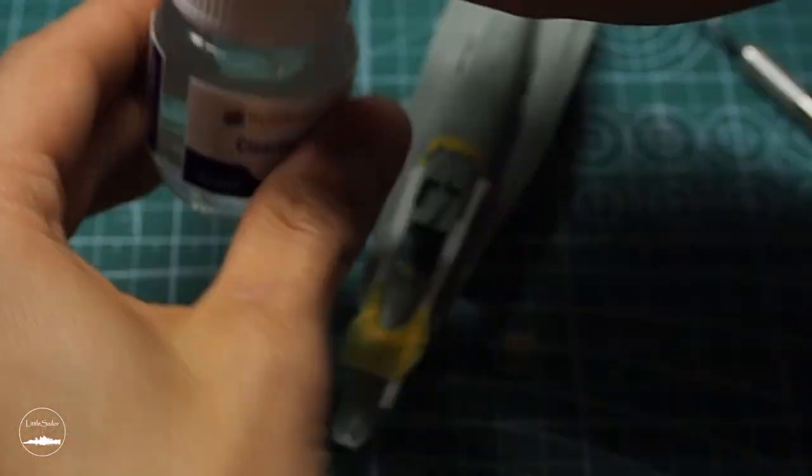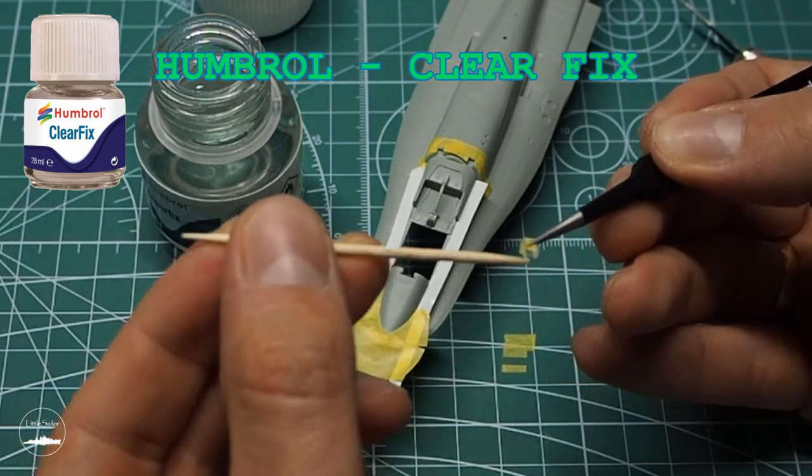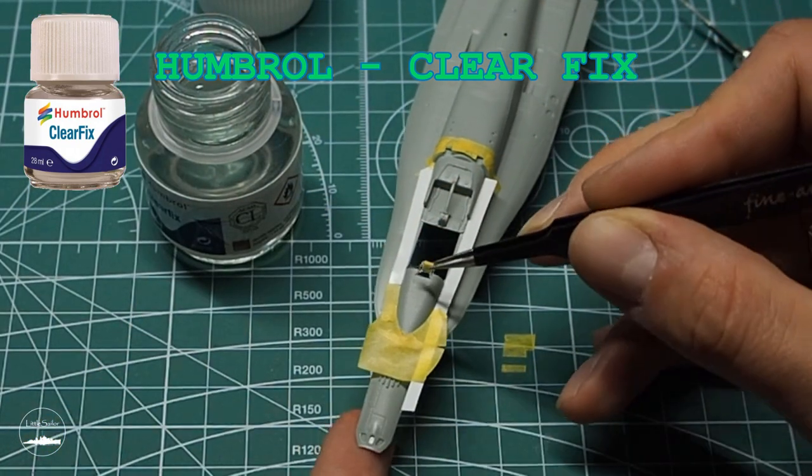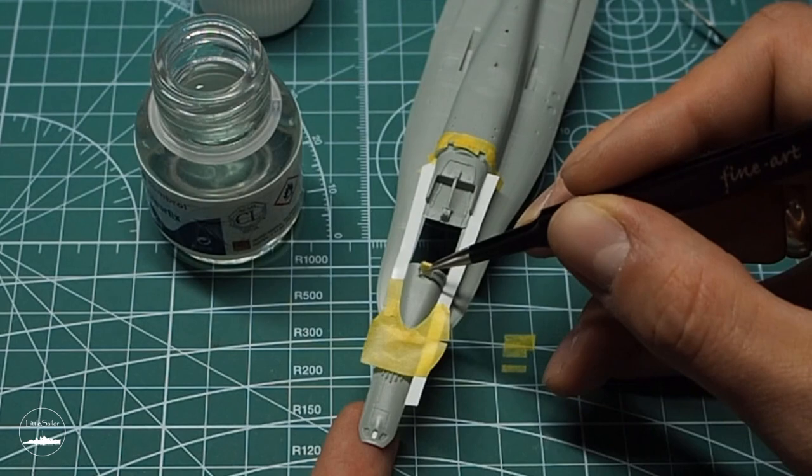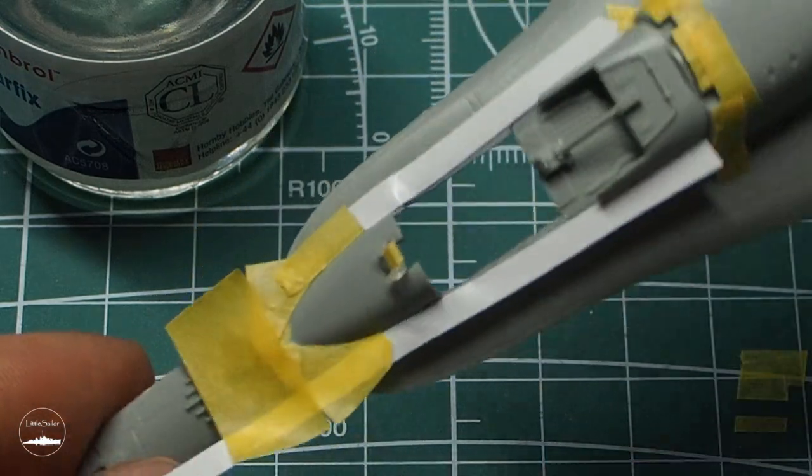I've pasted the masked HUD display using Humbrol's Clearfix glue. The advantage of this glue is that after drying it's completely transparent. It doesn't leave marks on the model, therefore it's perfect for gluing transparent elements such as windows or canopies.